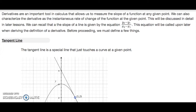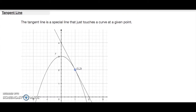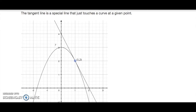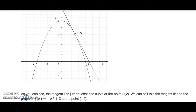Before proceeding, we must define the tangent line. The tangent line is a special line that just touches a curve at a given point. Here we have an example of a tangent line — the graph of the function f(x) = -x² + 3 with the tangent line at the point (1, 2).